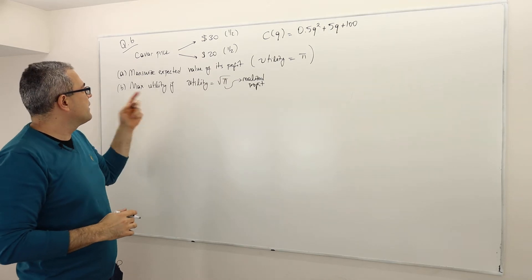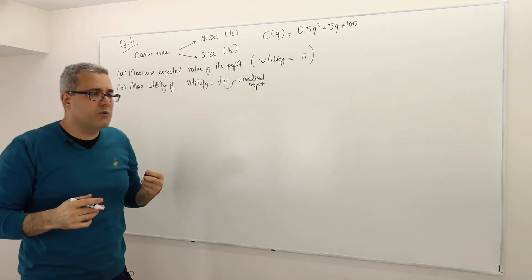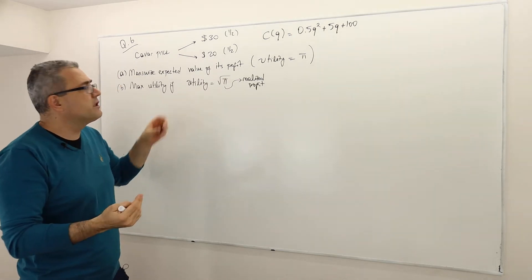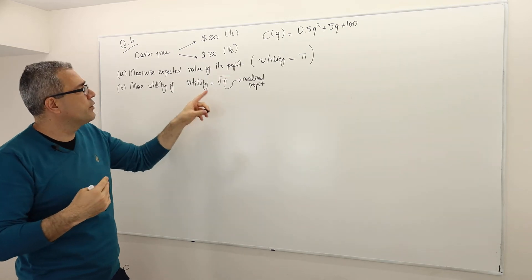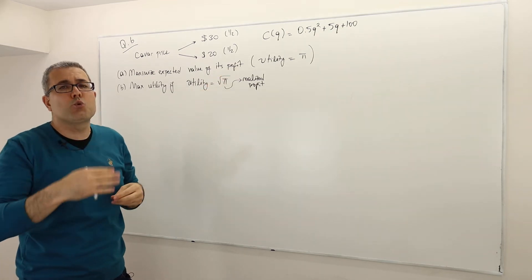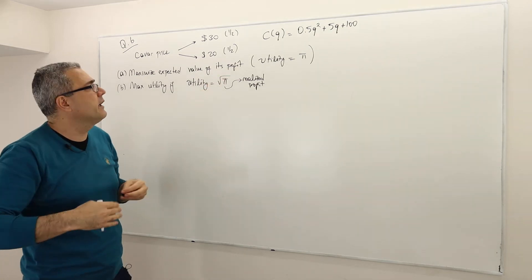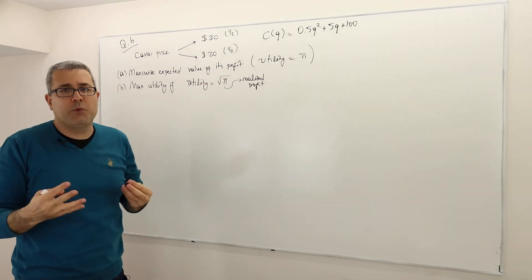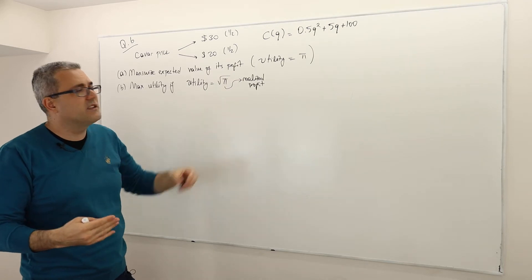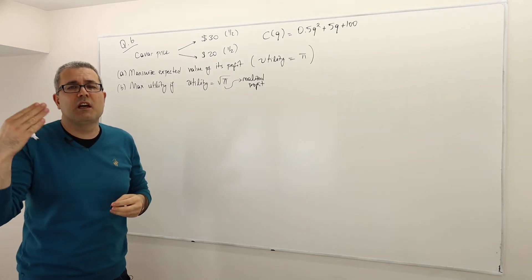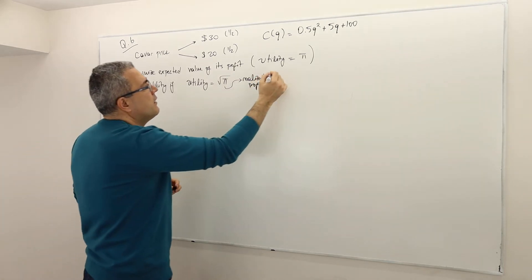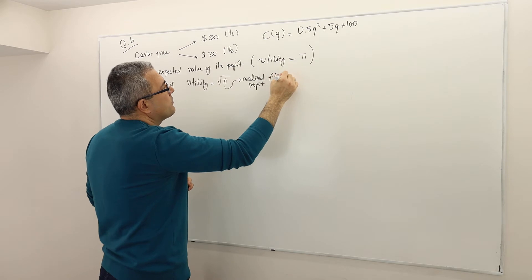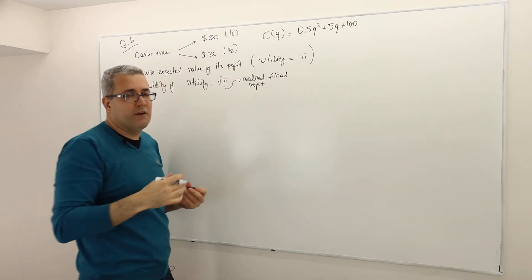In the second part, suppose the owner of the firm is a risk-averse guy. Therefore, the utility is the square root of pi. What is pi? Pi is the realized final profit.